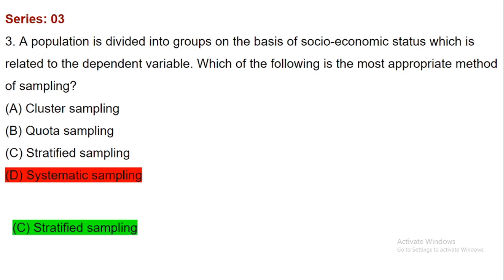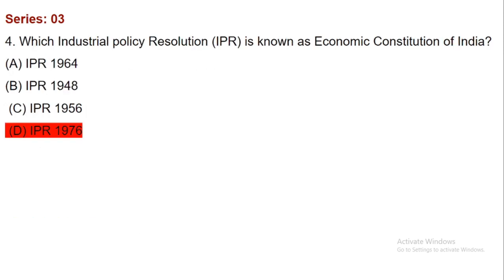The correct answer for question number three is stratified sampling. For question number four of that series — 'Which Industrial Policy Resolution (IPR) is known as the economic constitution of India?' — the correct answer is IPR 1956, not 1976 as I mentioned in that video. So IPR 1956 is the industrial policy resolution known as the economic constitution of India.